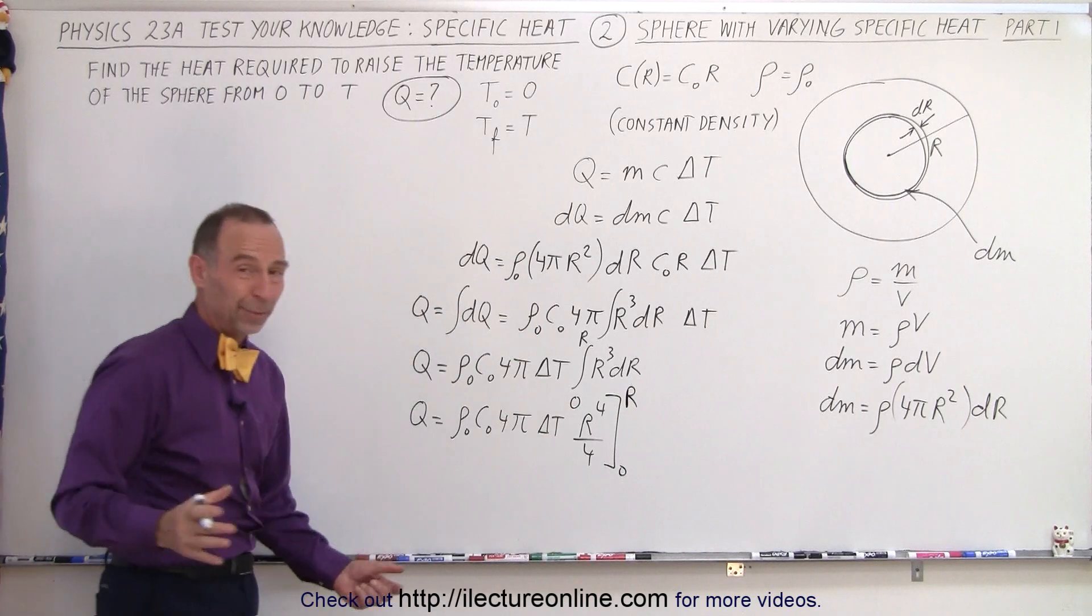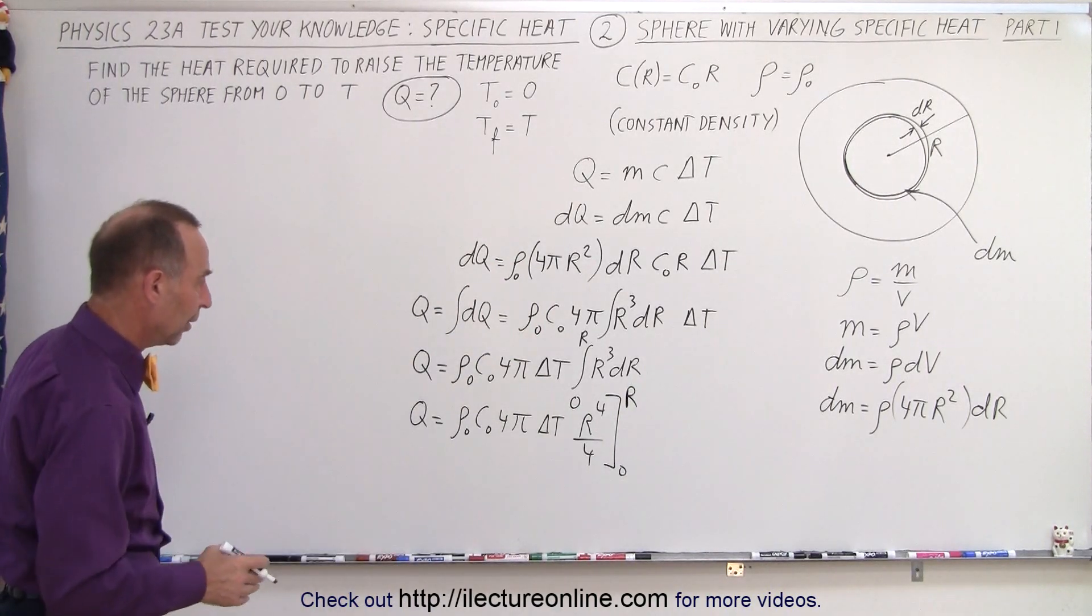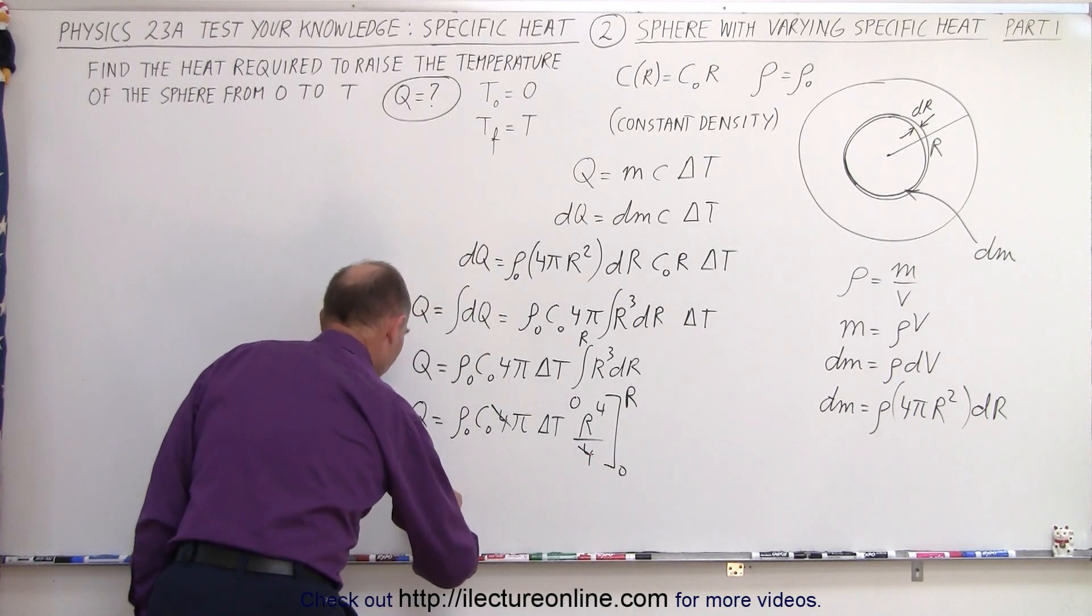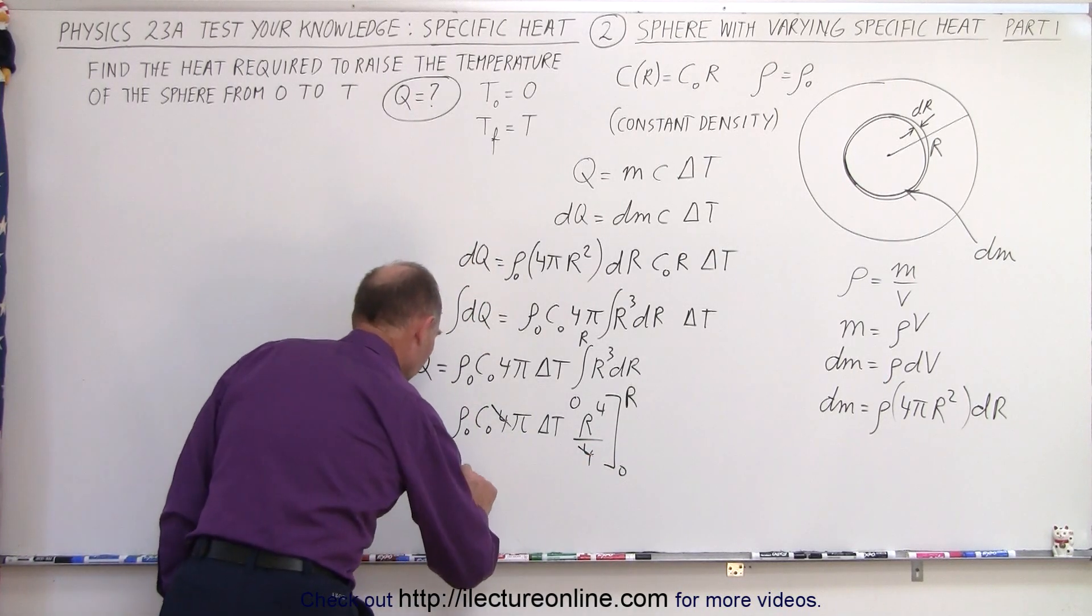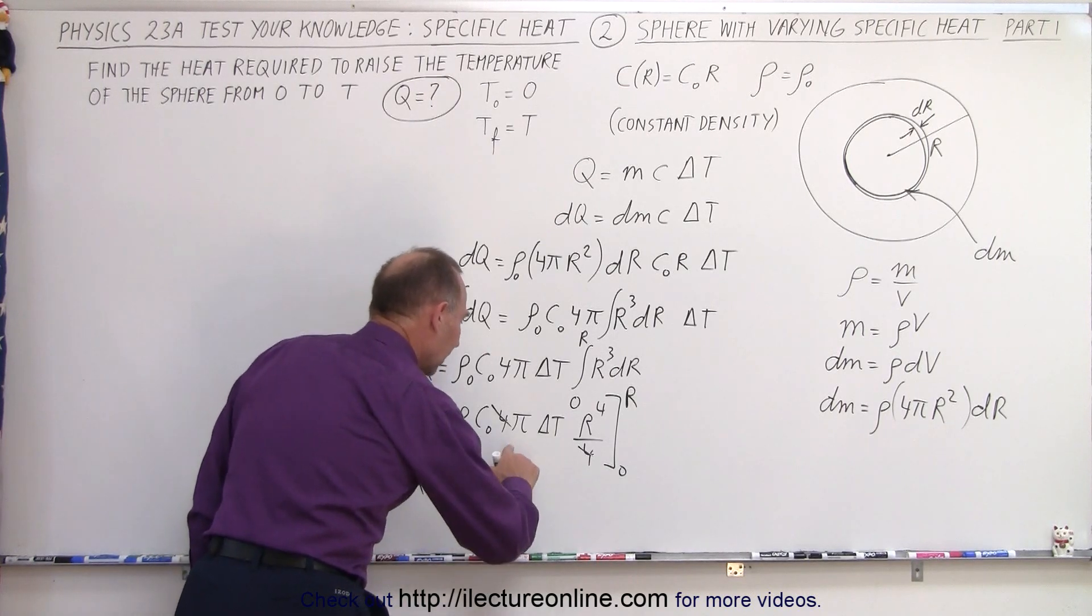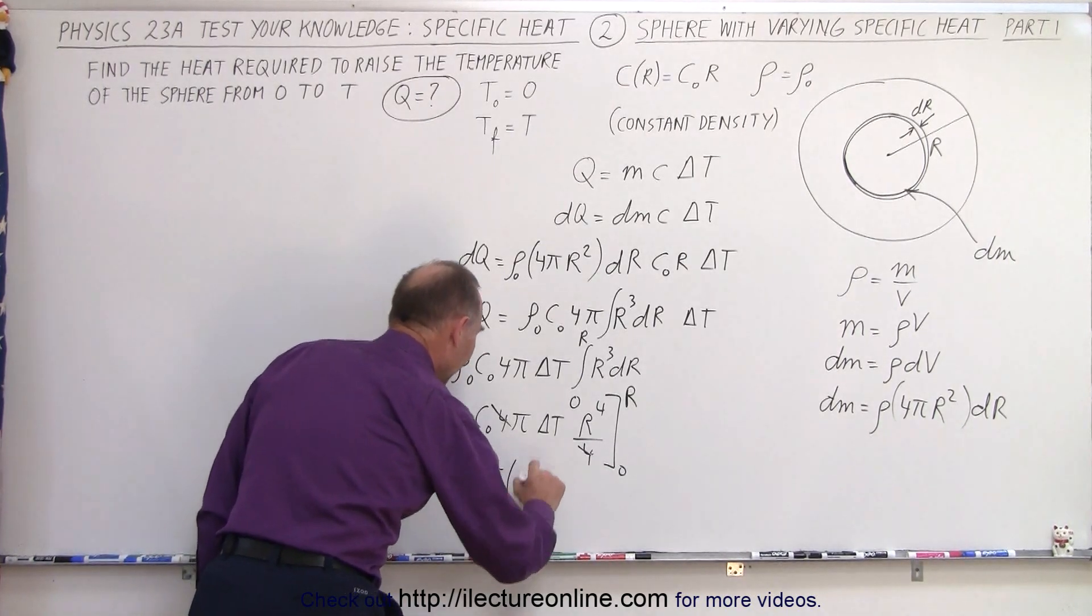Of course, when we plug in the lower limit, we get nothing, plug in the upper limit, we get r to the fourth, and the fourths cancel out, and so the total heat required is equal to density sub-naught c sub-naught times pi times delta t.